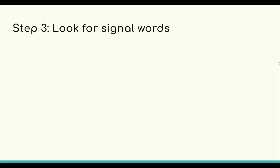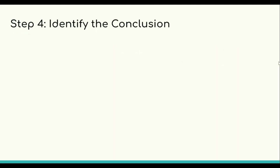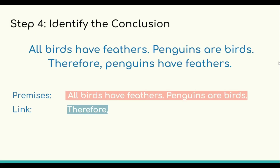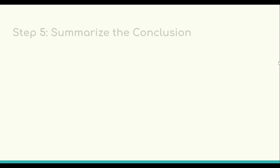Step three: look for signal words. In this argument, the signal word is 'therefore.' Moving to step four: identify the conclusion. The conclusion is 'penguins have feathers' — the main point the author is trying to convey, supported by the premise that penguins are birds.